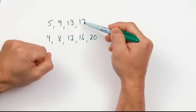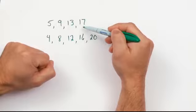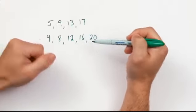See? 17 is the 4th term, and 17 is 1 more than 16, which is the 4th multiple of 4.